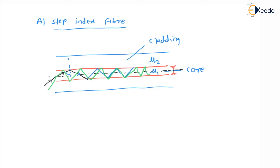Since the refractive index is constant, all the light rays traveling through the core section will have different path lengths. Because there is a difference in path, all the rays will take different times to reach from the start to the end. This means all light rays will not arrive at the end point at the same time, which will create distortion in the signal. This problem is overcome in graded index fiber.